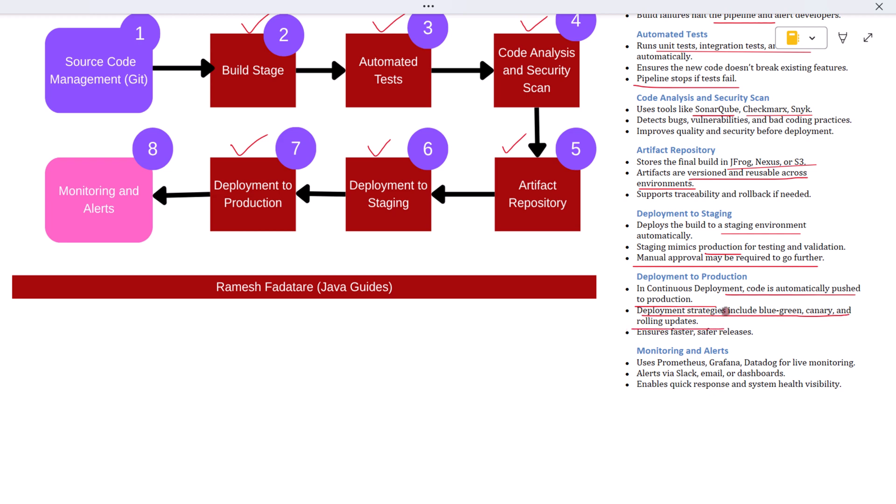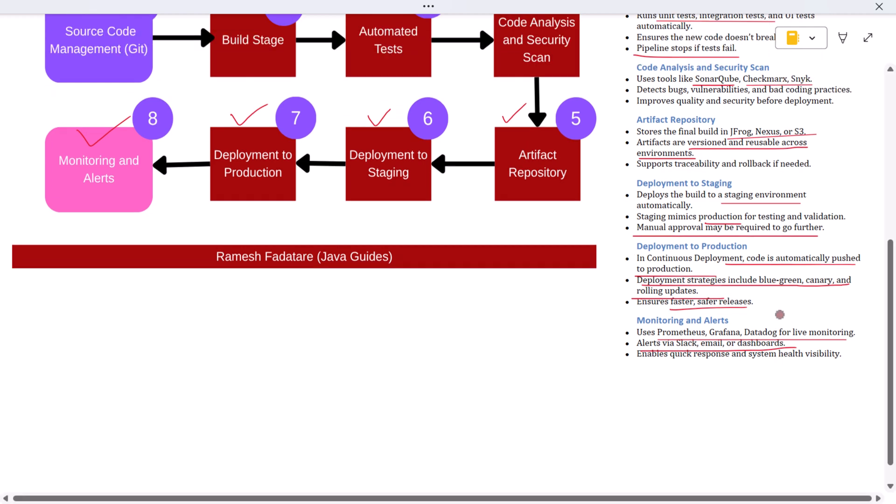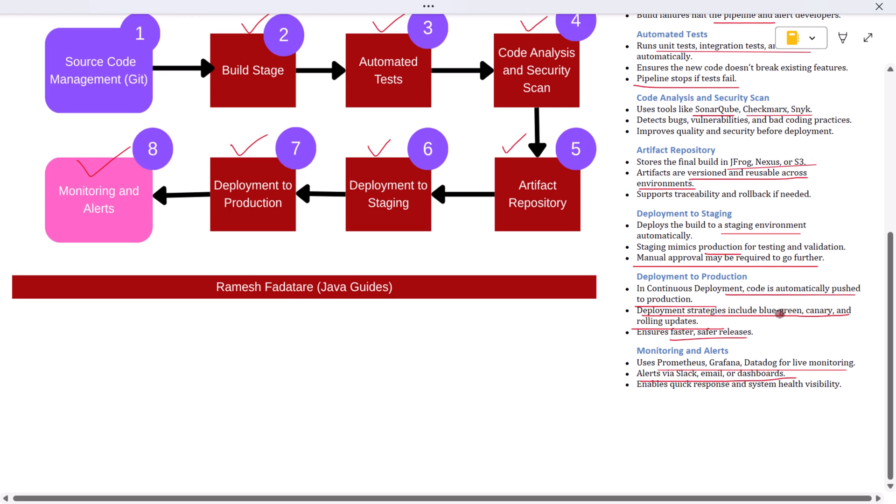The final stage is monitoring. Once the application is live, monitoring tools like Prometheus, Grafana, Datadog, or New Relic track performance, uptime, errors, and user behavior. If something goes wrong, alerts are sent out, usually through Slack, email, or an incident dashboard, so the team can respond quickly. CI/CD doesn't end at deployment. Observability and feedback close the loop and ensure a healthy system.